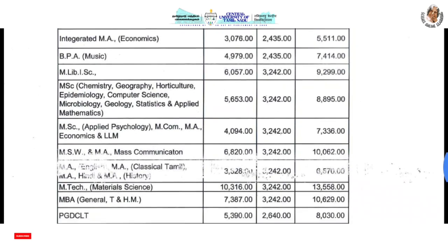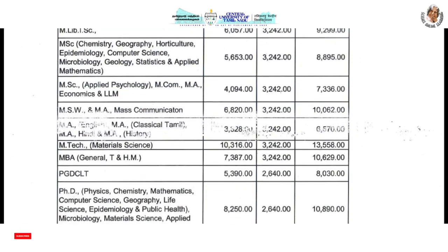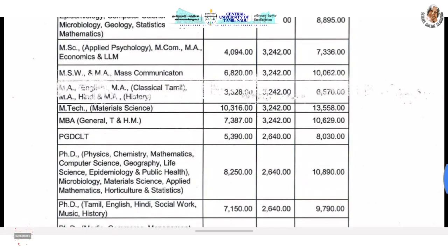BPA Music is 7,444. Master of Library and Information Science is 9,299. MSc courses are 8,895. MSc and Applied Psychology is 7,336. Then it is 10,062.